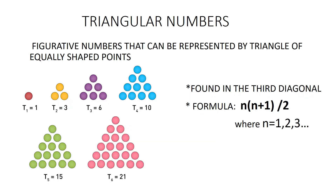Next is triangular numbers. A triangular number is a figurative number which represents the number of dots that can be uniformly arranged in an equilateral triangle. The sequence is 1, 3, 6, and so on. The general formula is n(n+1)/2, where n belongs to natural numbers. That is, the nth triangular number is the sum of the first n natural numbers. These numbers are found on the third diagonal of Pascal's Triangle symmetrically.